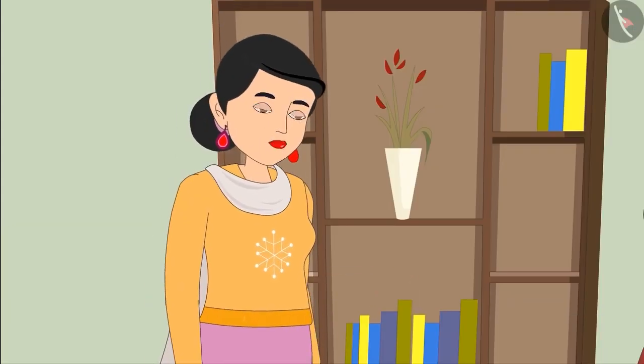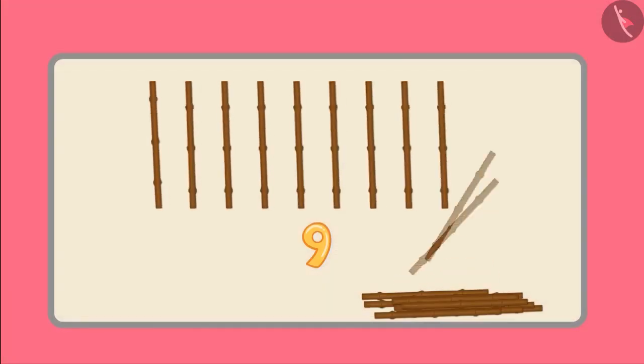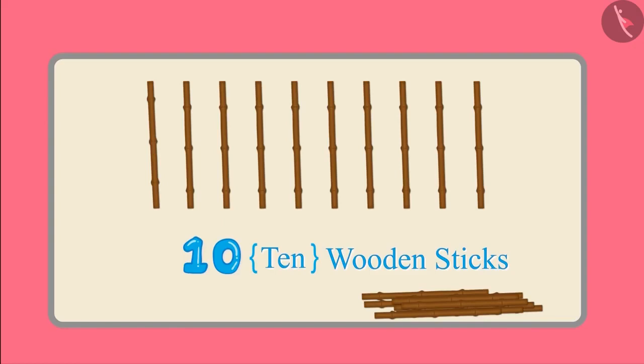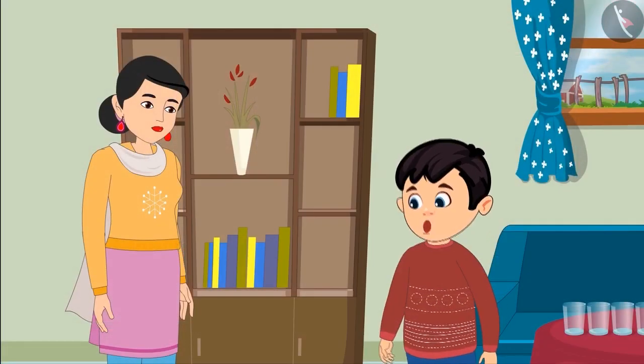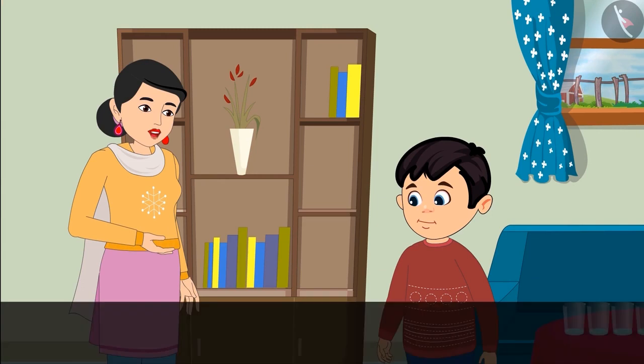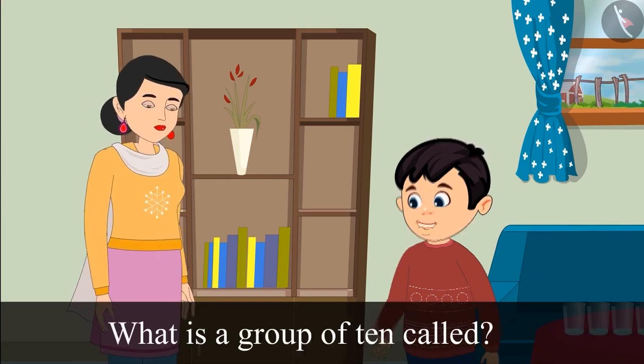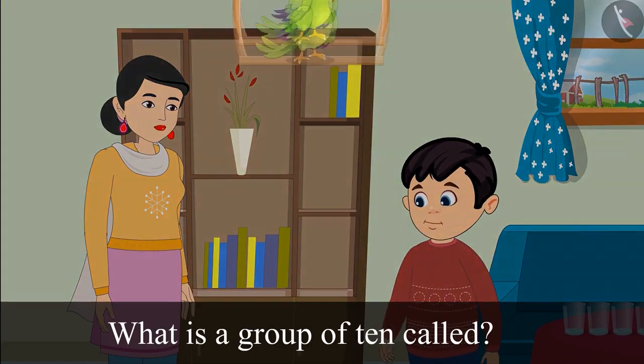If we add one more wooden stick to nine wooden sticks, then we get ten wooden sticks. I see. Do you know Choto what is any group of 10 called? No mummy, what do we call it?